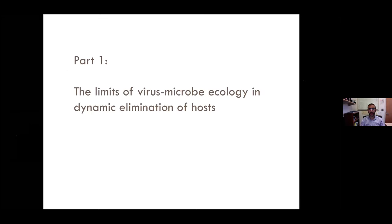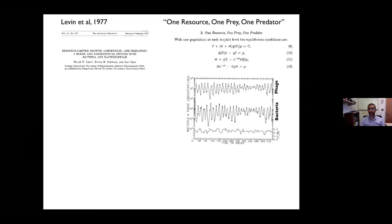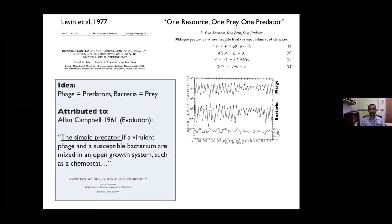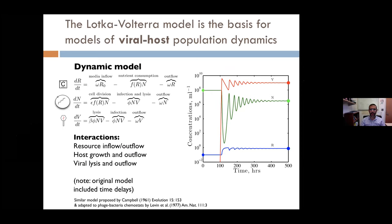The paradigm for lytic phage-bacteria interactions originated with Campbell in 1961 and Bruce Levin in the late 70s: the idea of prey—the bacteria—and the predator—the virus—and the dynamics arising in terms of predator-prey cycles. In these models we have some nutrient, some bacteria, some virus; new resources come in, resources go out, resources are taken up leading to division of cells, infection, and lysis. You see these oscillations.